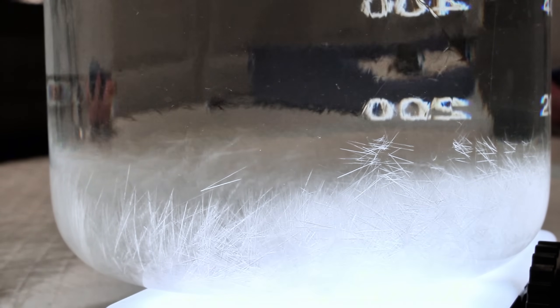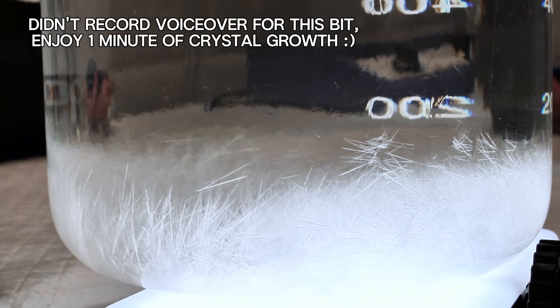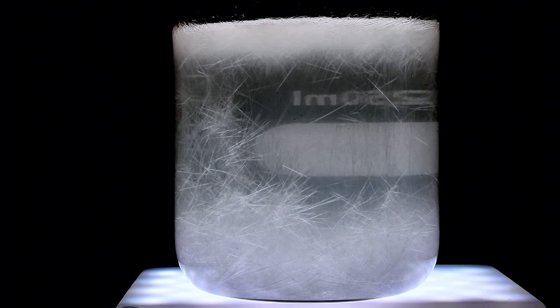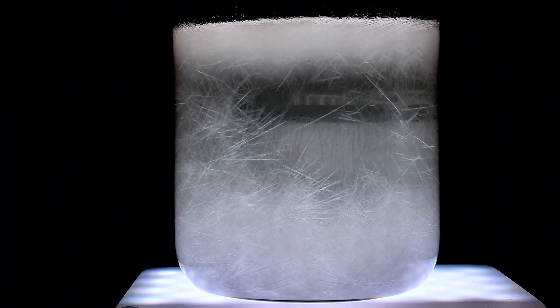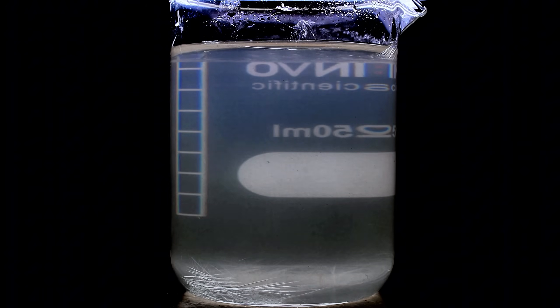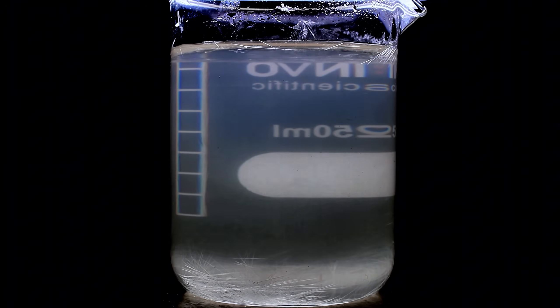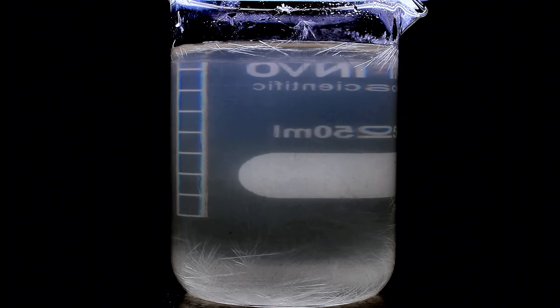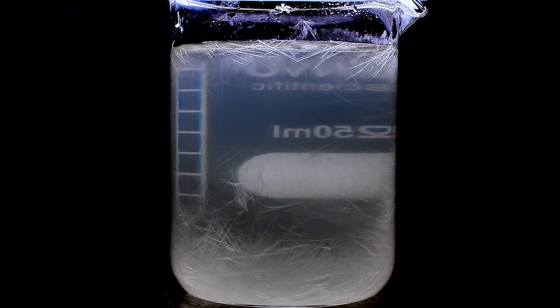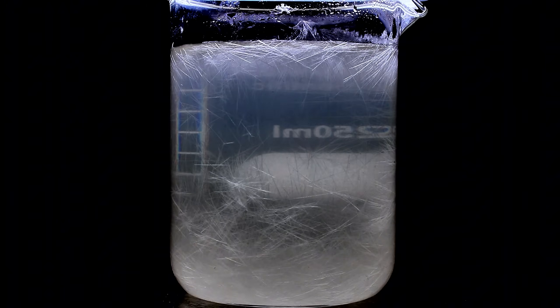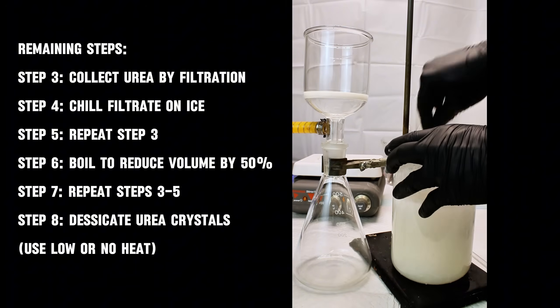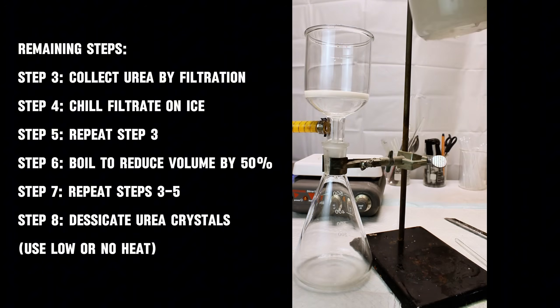As the urea solution cools, it will form long needle-like crystals that seem to start from the bottom of the beaker and move up to the top. After the solution has been allowed to cool to room temperature, I break up the urea crystals as best I can and collect them by vacuum filtration.